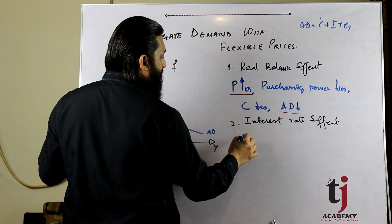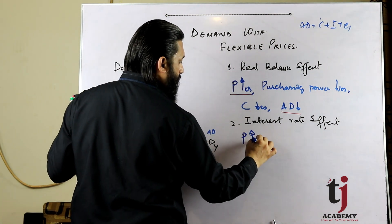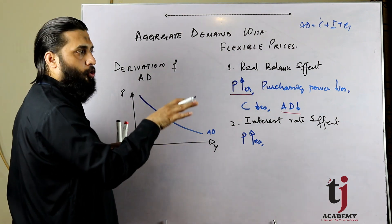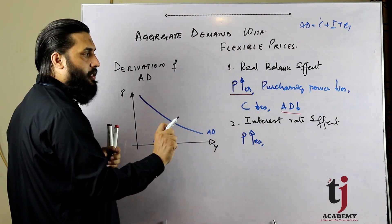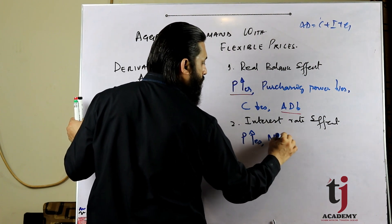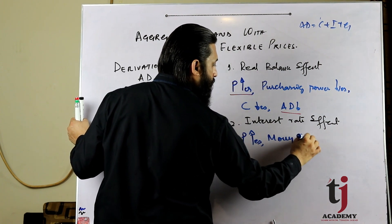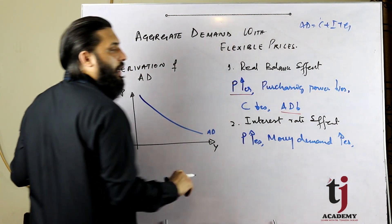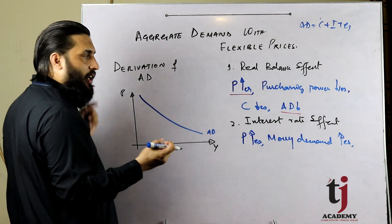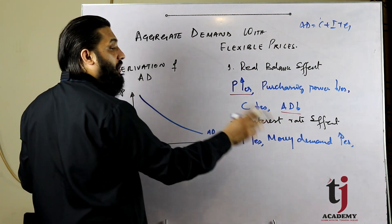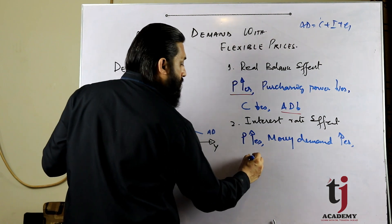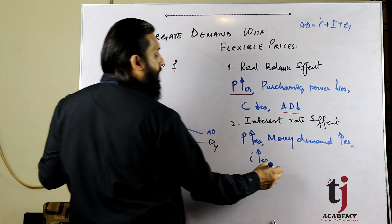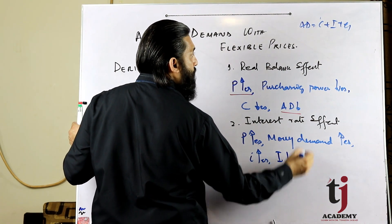Why aggregate demand has a negative slope - reasons. Dekho, let's suppose price level badh jata hai. Price level ke badhne ki wajah se, especially banks - money prices and interest rate ko affect karta hai. Interest rate increase hoti hai, investment decrease hoti hai, jisse aggregate demand kam hoti hai.